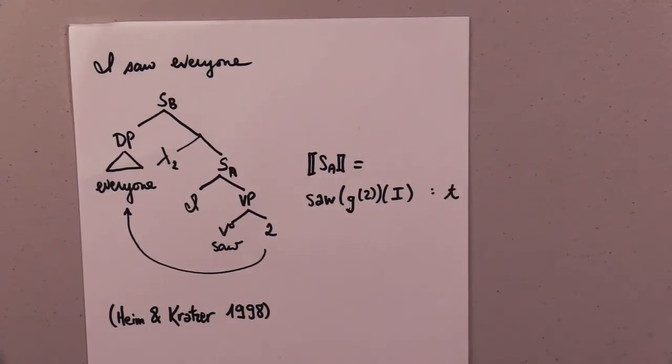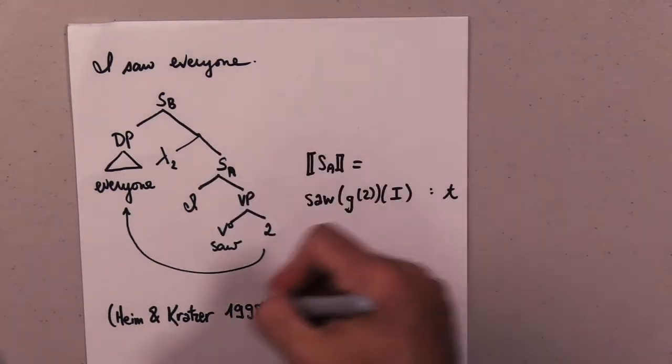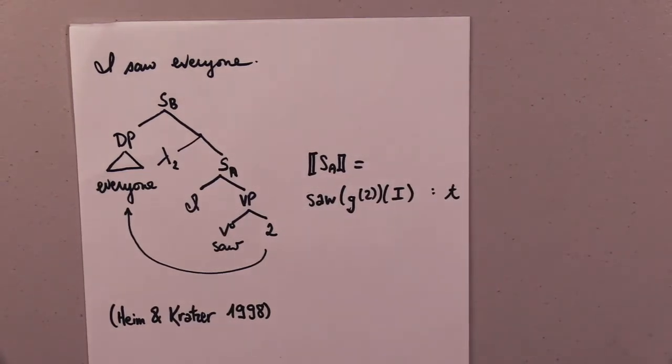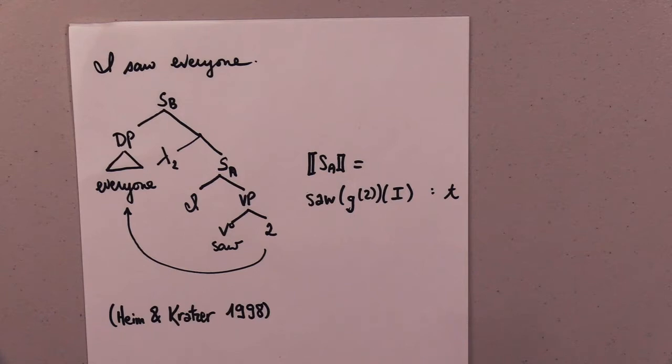For an example, we can look at a simple sentence like 'I saw everyone,' done in the Heim-Kratzer style with simple sentences and a woefully antiquated syntax. When do you use predicate abstraction? You use it when there is movement and when there is binding.